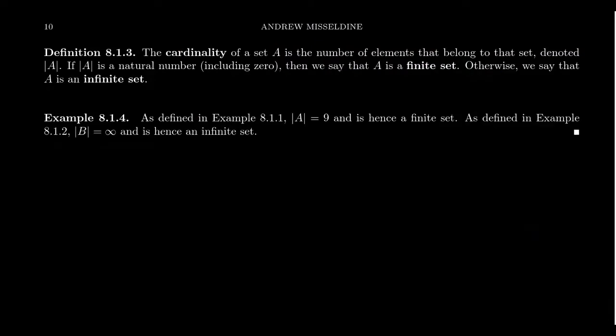Speaking of definitions, let's give a very important definition when one talks about sets: the definition of cardinality. The cardinality of a set is the number of elements that belong to that set. If the set is called A, we typically denote the cardinality as what looks like the absolute value of A — but A is not a number, it's a set. This notation is used to denote the number of elements that belong to the set.